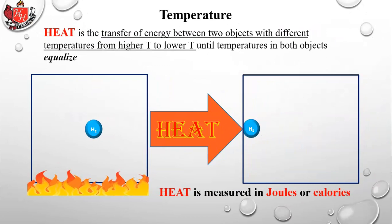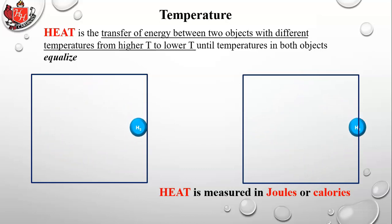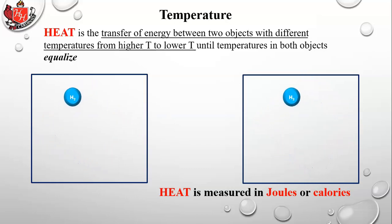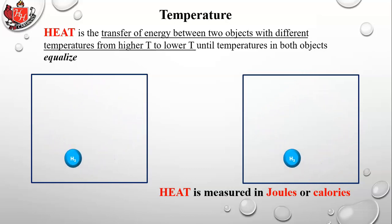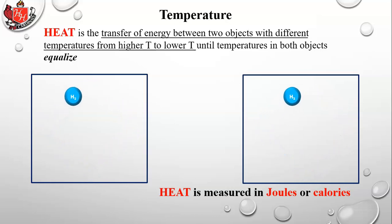Heat is the transfer of energy between two objects with different temperatures, and it flows from higher temperature to lower temperature. After heat transfers, the temperatures equalize — those two hydrogen molecules end up moving at the same speed. Heat is measured in two units: joules, which is the general unit of energy used for electrical, mechanical, light, and sound energy; and calories, which is a unit specific to heat energy.